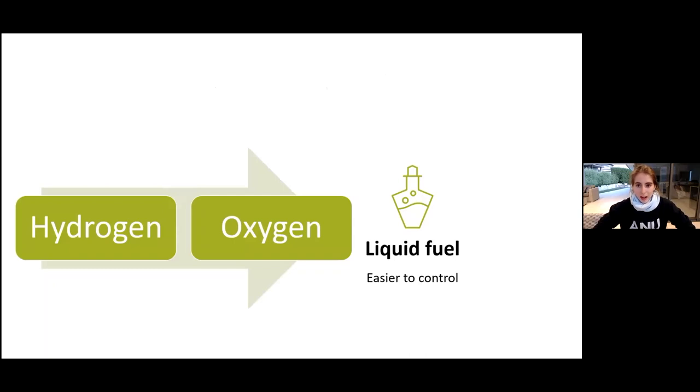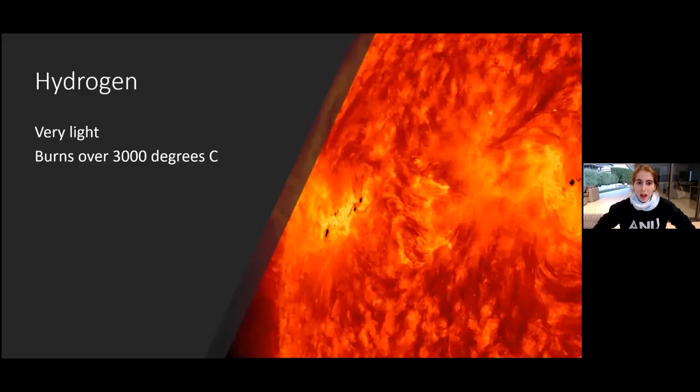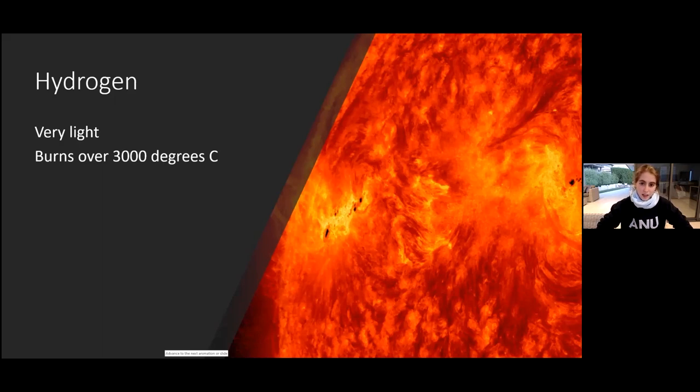So what about hydrogen and oxygen? Hydrogen is great because it's really really light. It's the lightest molecule on Earth and it burns really intensely, over 3000 degrees Celsius. It's going to be very very hot for that reason and as it burns and explodes it's going to create a lot of energy that's going to push our rocket along.